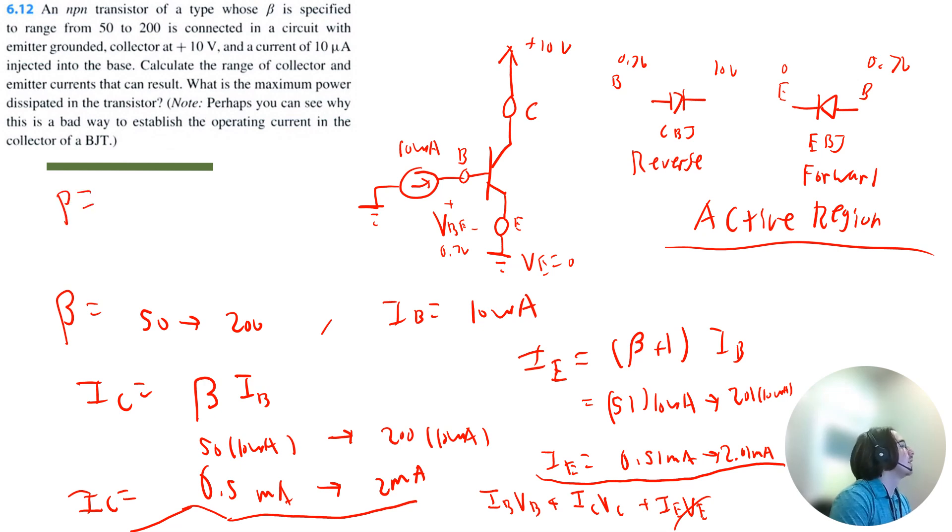So power will be equal to the maximum base current, which is 10 microamps multiplied by 0.7 volts, and then we're going to add the maximum collector current, which will be 2 milliamps multiplied by the voltage, 10 volts. And I get about 20 milliwatts for the power.